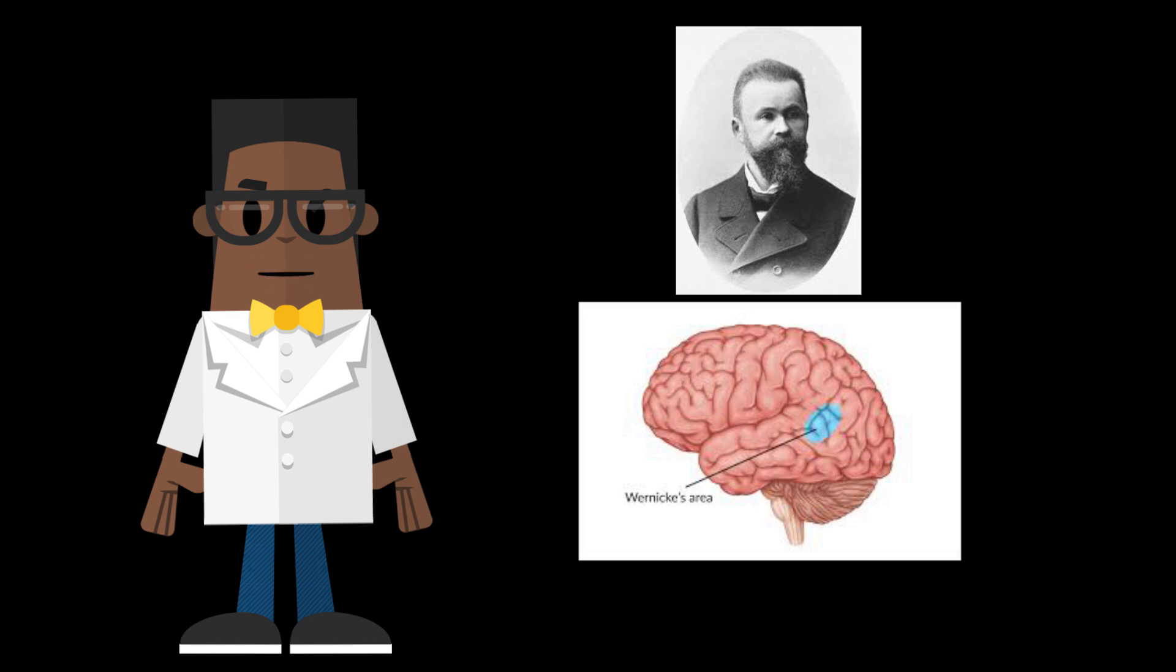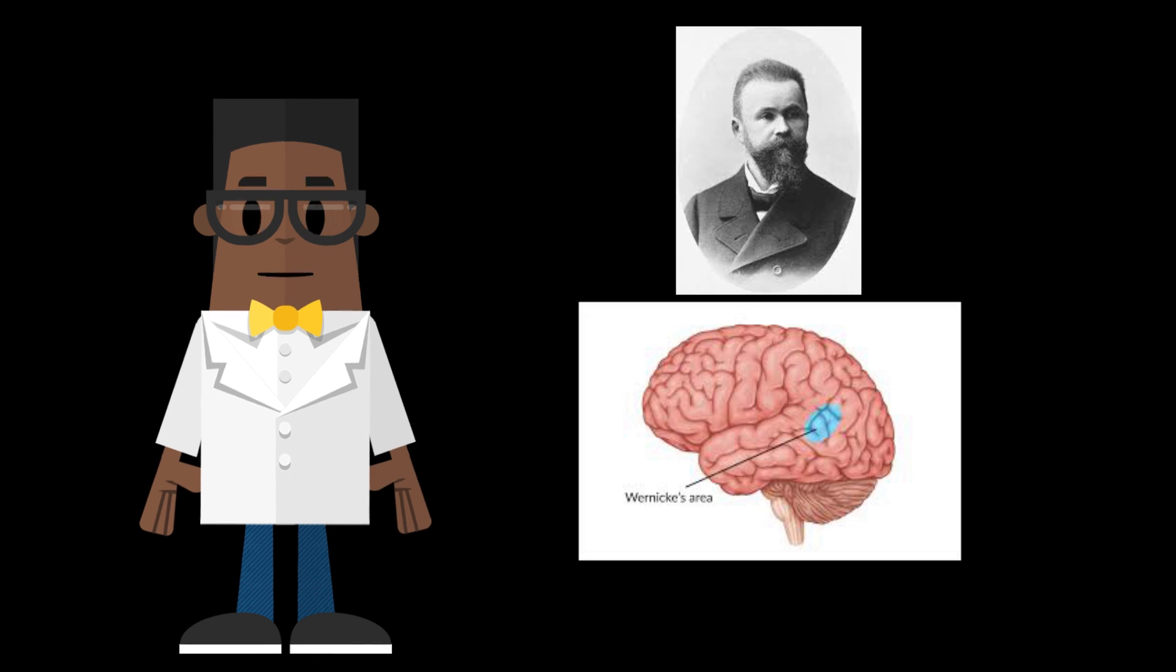These patients would either use made-up words or substitute words in places that did not make sense. The region of the brain was later named Wernicke's area for his work. Since both Broca's area and Wernicke's area are found in the left hemisphere of 95% of people, the left brain has been labeled the hemisphere primarily in charge of producing and processing speech, though the right hemisphere still plays a role.